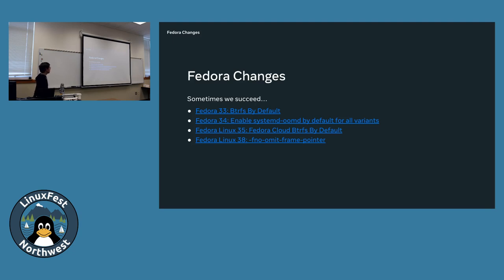Some changes: BtrFS by default, in Fedora 34 we enabled BtrFS compression by default. Frame pointer support landed in Fedora 38 and only became settled with Fedora 40 when nobody was complaining about it being too slow. Anything to do with integrity work is really hard to get in.